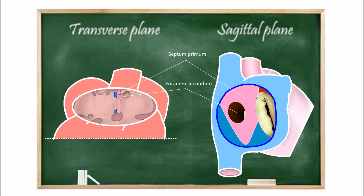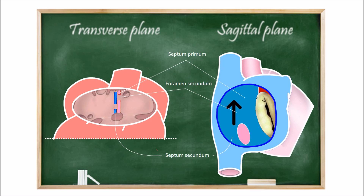The second step is the formation of the septum secundum — a membrane that locates to the right of the septum primum, parallel to it. It grows from bottom to top and then attaches to the endocardial cushions too. Finally, these two membranes fuse together to form the interatrial septum, inside of which can be found the foramen ovale.